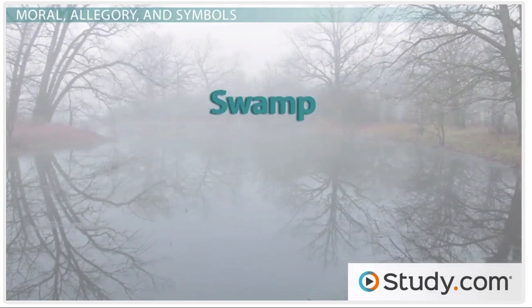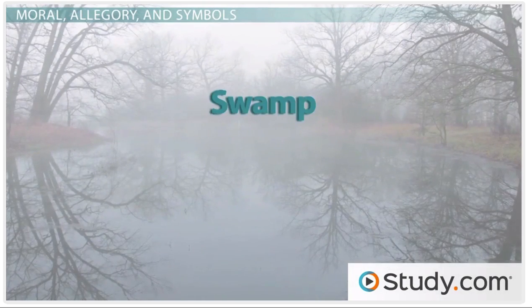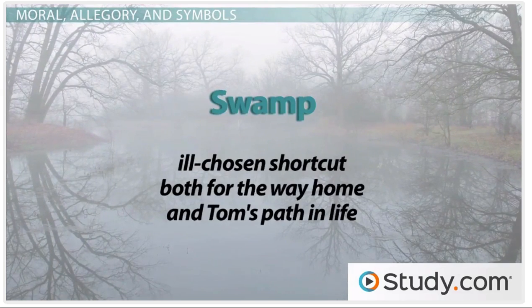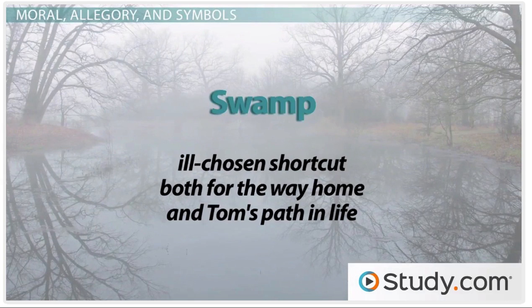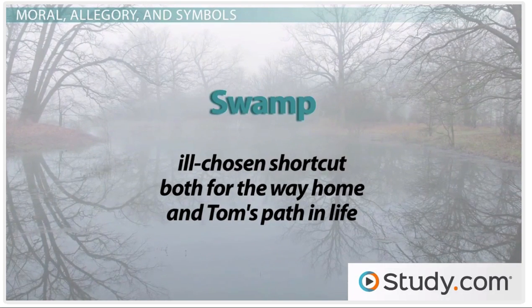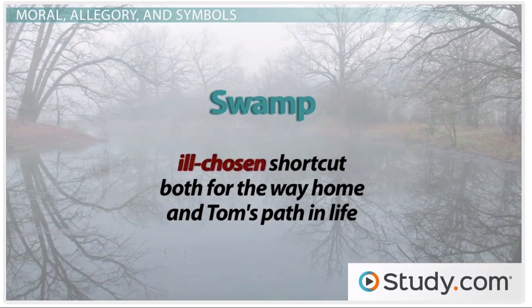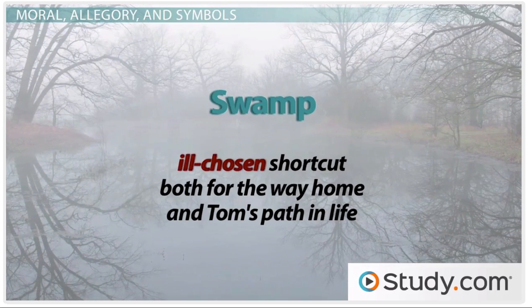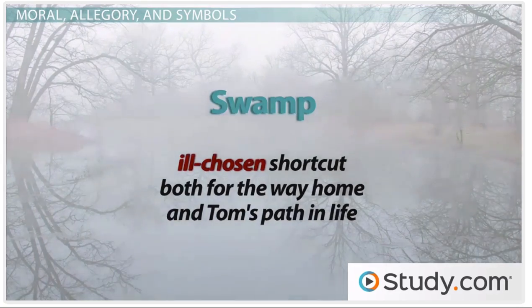The swamp is described as a shortcut, an ill-chosen route. It is not only Tom's shortcut home, but it was his shortcut to obtaining the wealth he wanted. But, as the narrator tells us, it was an ill-chosen shortcut, because it cost him eternal damnation. So here the swamp symbolizes the figurative wrong path.